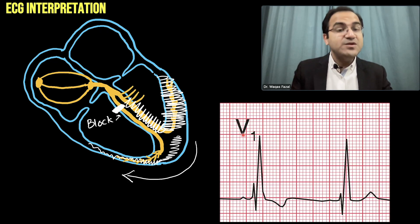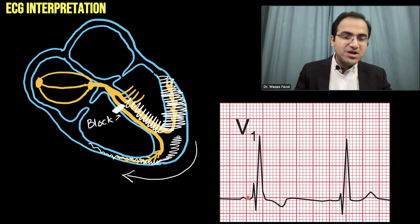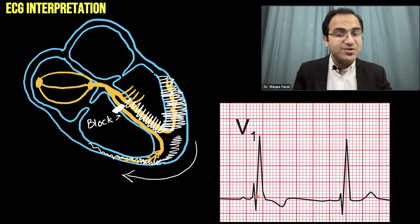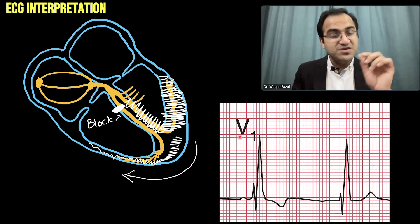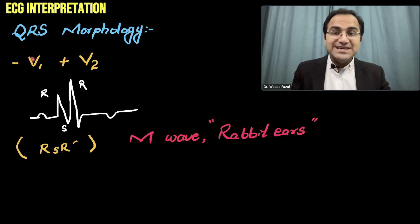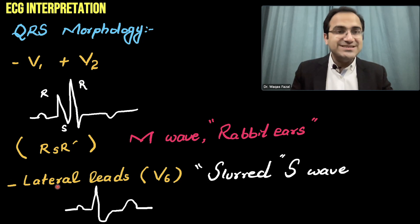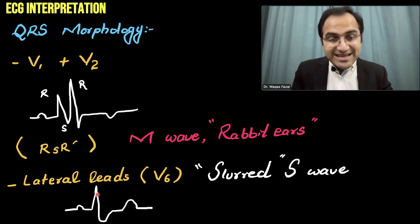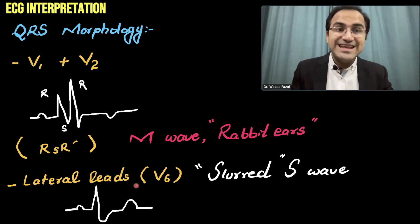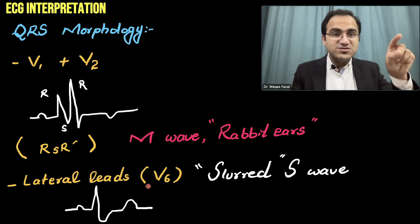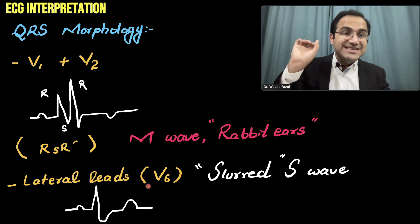This M wave is seen in V1 in right bundle branch block. The first wave is due to left ventricle depolarization and the second wave is due to depolarization of the right ventricle, seen classically in V1 and V2. The QRS morphology in V1 and V2 shows a first R wave followed by a second R wave, appearing as an M wave or rabbit ears — called the RSR' pattern. In the lateral leads, in V6, you will see slurring of the S wave — a deep, slurred S wave.